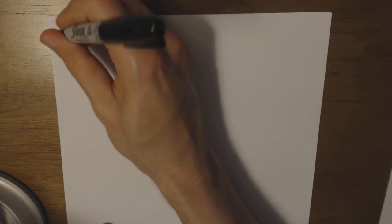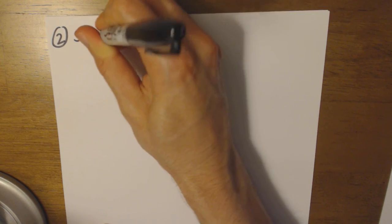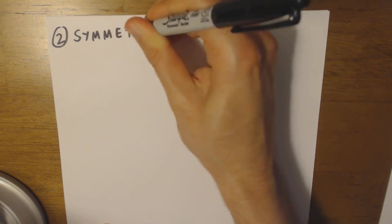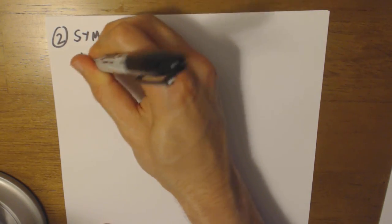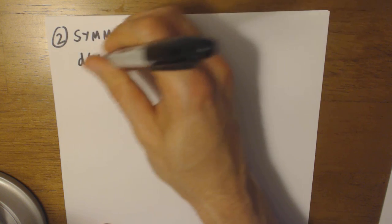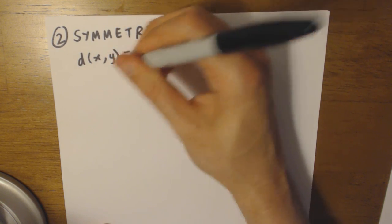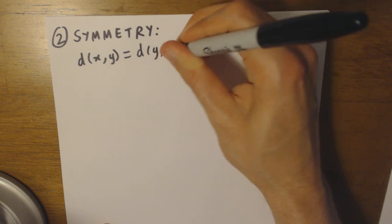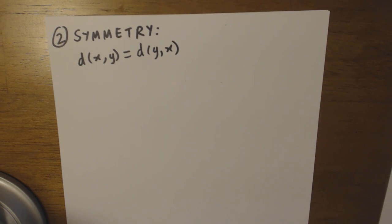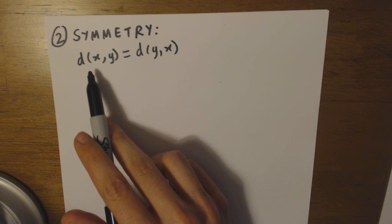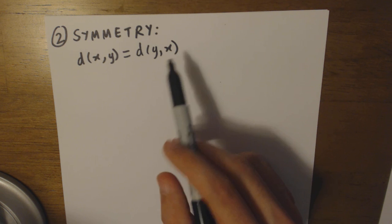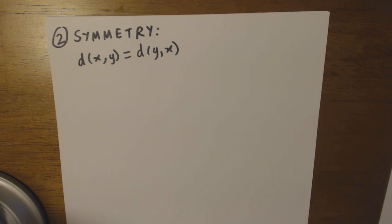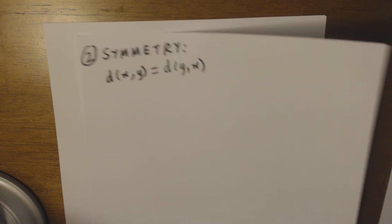Condition number two: symmetry. This is pretty much exactly what it sounds like. We require that the distance function between a point x and y should equal d(y,x). So the distance between one point and another point should equal the distance between the second point and the first point. Again, we'll look at an example to make this more solid.